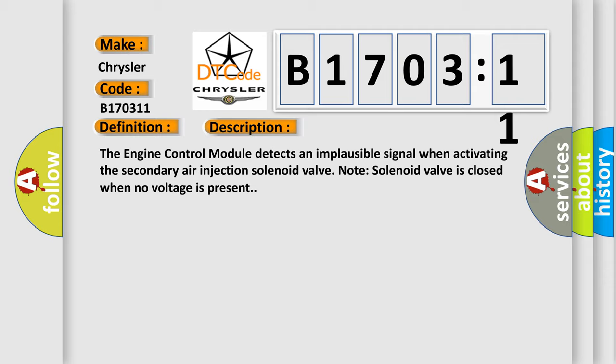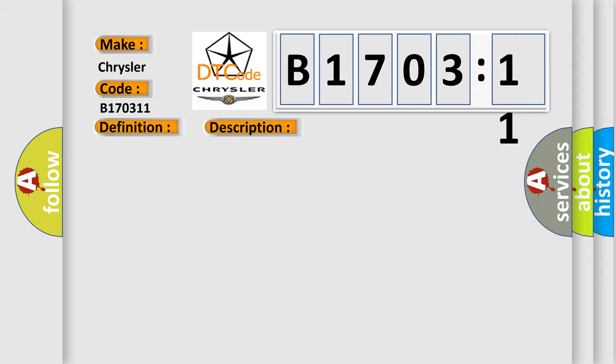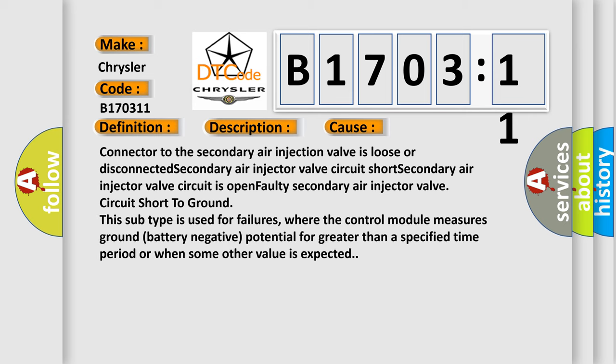This diagnostic error occurs most often in these cases: Connector to the secondary air injection valve is loose or disconnected. Secondary air injector valve circuit short. Secondary air injector valve circuit is open. Faulty secondary air injector valve circuit short to ground.